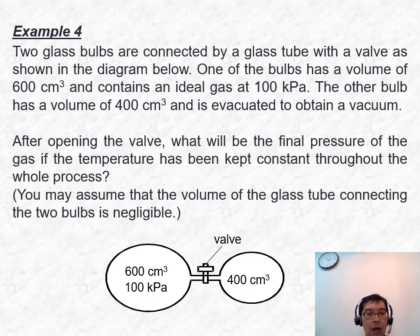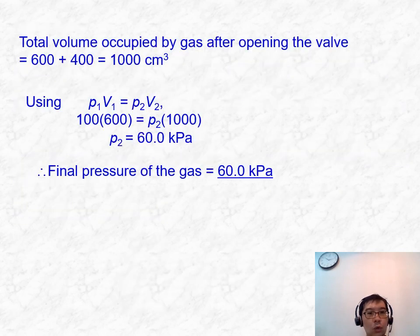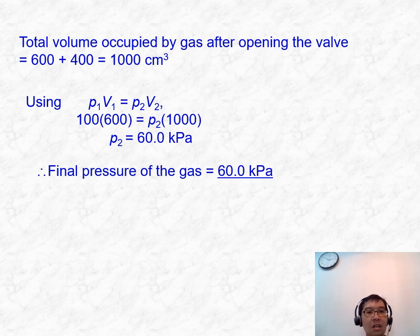For example 4, there were two glass bulbs disconnected at first. After opening the valve, calculate the final pressure. After opening, the total volume becomes the sum of the two separate glass bulbs, giving 1,000 cm³. Applying Boyle's Law with P₁V₁ = P₂V₂, the final pressure for the combined volume of 1,000 cm³ is 60.0 kPa.